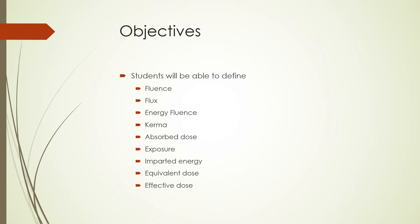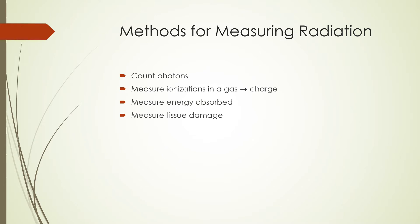In last week's lecture, we saw that when radiation in the form of charged particles or photons and neutral particles interact with matter, they cause ionization, excitation, or radiative losses. In order to understand how these interactions affect biological material, we will define a few terms that help to quantify radiation. We will look at terms that describe how we count photons, measure ionization in a gas, measure absorbed energy, and measure tissue damage.